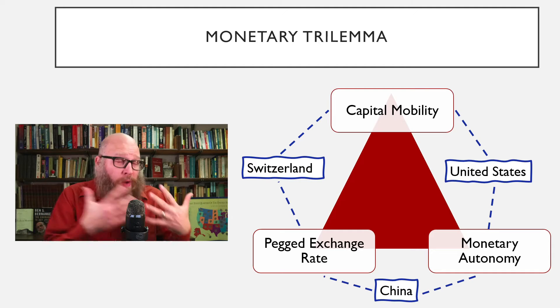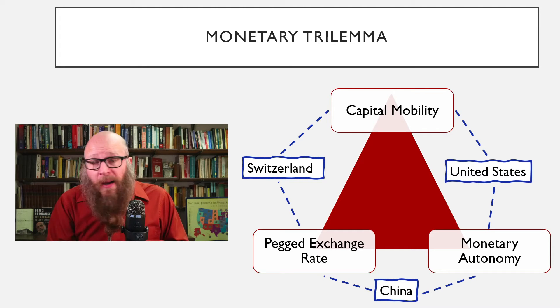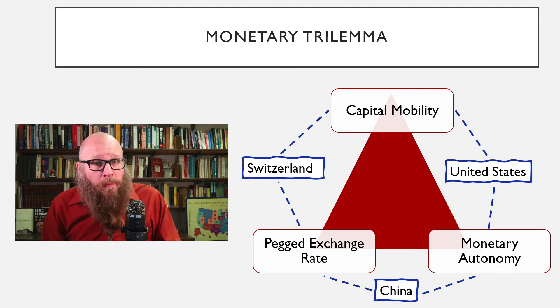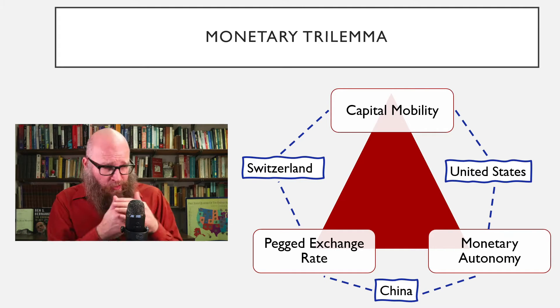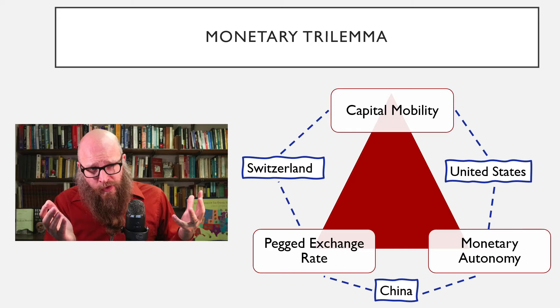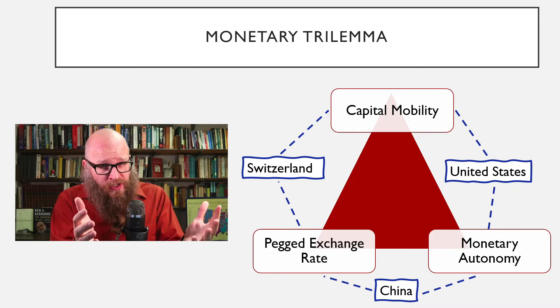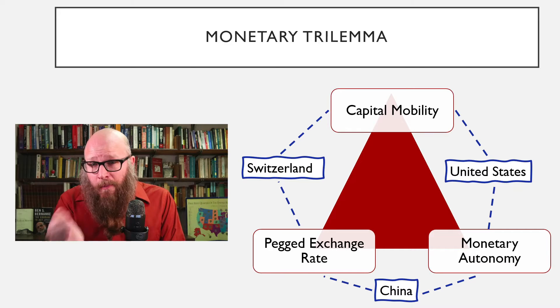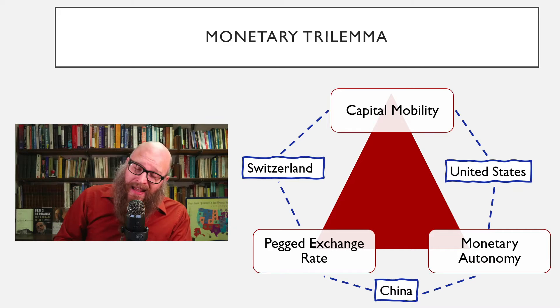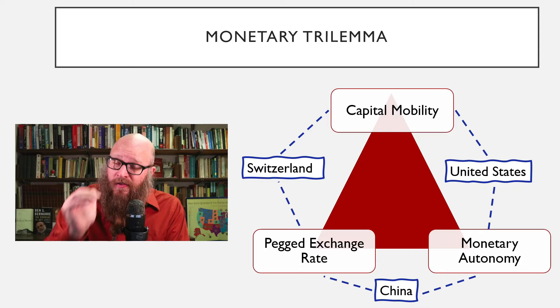Whereas for the US, trade is important, but it's a much smaller portion of the economy. So for the United States central bank to target exchange rates would have a smaller effect than if it were to target recessions and other domestic concerns.